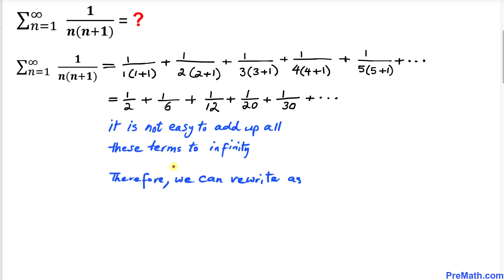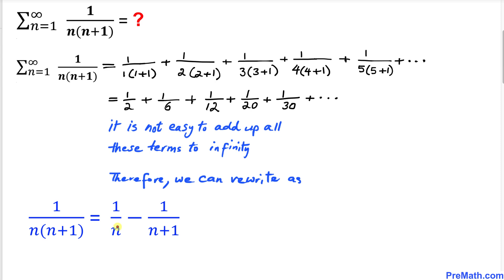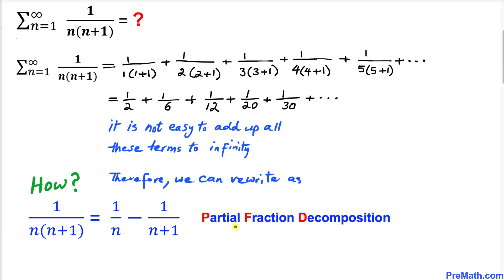Therefore we are going to use a strategy in which we rewrite 1 over n times (n plus 1) as 1 over n minus 1 over n plus 1. You might be wondering how — we use partial fraction decomposition. Let me show you how in the next step.